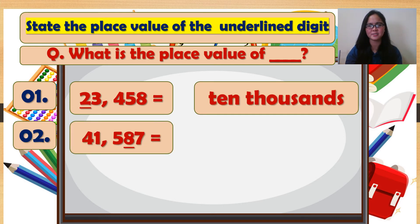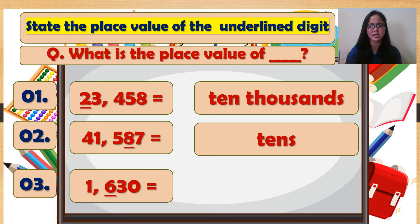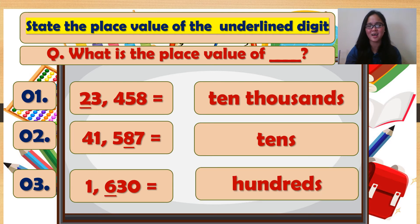Number 2: 41,587. 8 is... it's tens. Good. Number 3: 1,630. 6 is... it's hundreds.